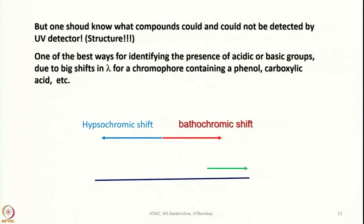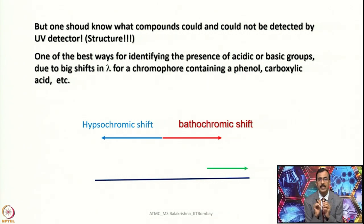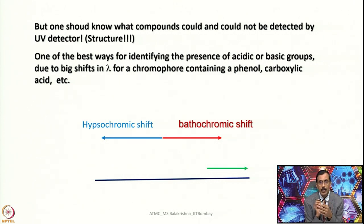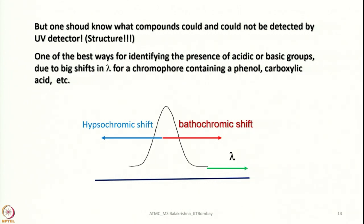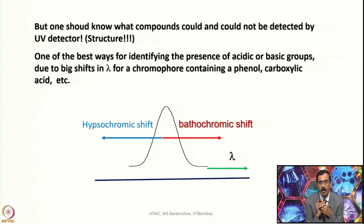One should know what compounds could and could not be detected by a UV detector. UV is one of the best ways for identifying the presence of acidic or basic groups due to big shifts in lambda (wavelength) for a chromophore containing a phenol, carboxylic acid, etc. If peaks are shifted towards shorter wavelength we call it a hypsochromic or blue shift, and if shifted the other way it is called a bathochromic or red shift.